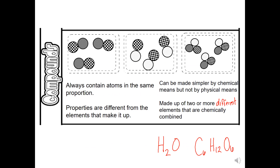With a compound, two different atoms or elements have combined and formed a chemical bond — there has been a chemical change. They always contain the same proportion; for example, water has a two-to-one ratio of two hydrogen atoms to one oxygen atom. The properties are different from the individual elements that make it up, as we saw with sodium chloride. Compounds can be made simpler, but only by another chemical change to break those bonds. They are made up of two or more different elements chemically combined.